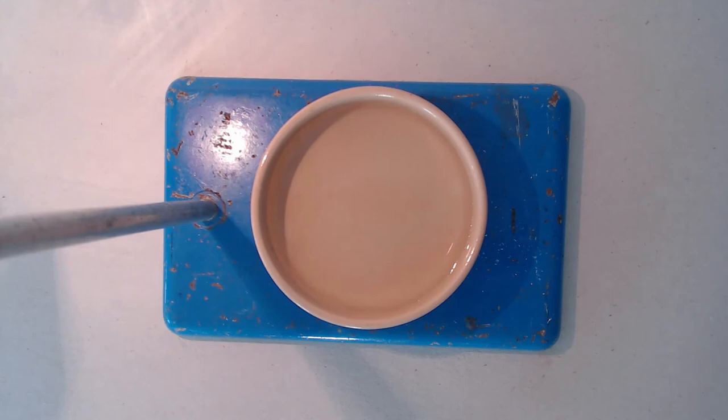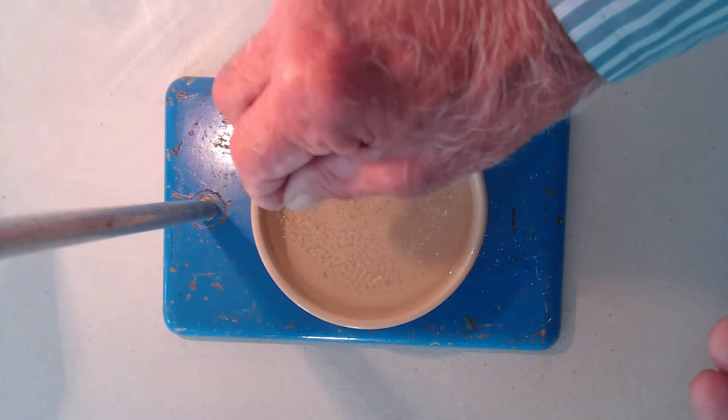In the second experiment about the surface tension of water I've simply got a small bowl and it's full of water. Once again clean water straight from the tap, and all I'm going to do is to sprinkle some sawdust on the surface of the water.